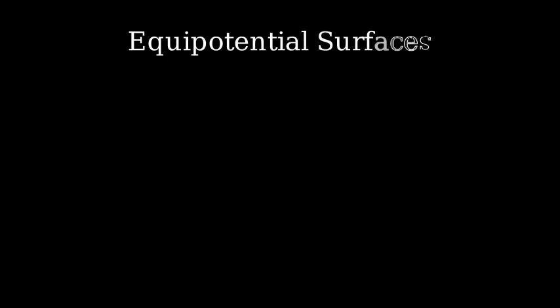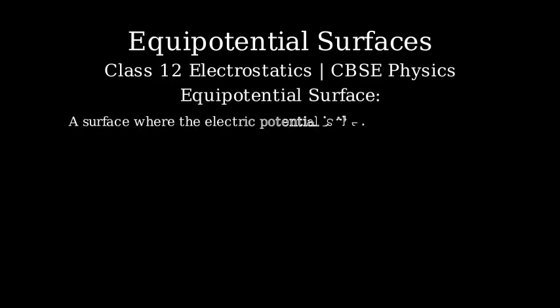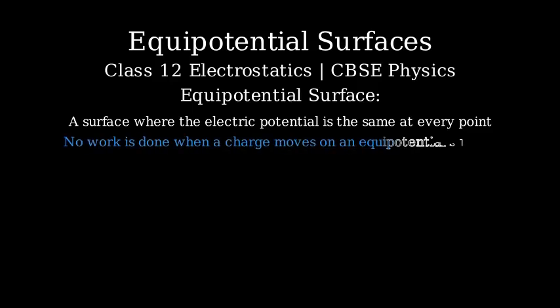Welcome to this video on equipotential surfaces. This concept is a crucial part of electrostatics, which we'll explore today. Let's start by understanding what an equipotential surface is. An equipotential surface is a surface on which the electric potential is the same at every point. When a charge moves on an equipotential surface, no work is done by the electric field.